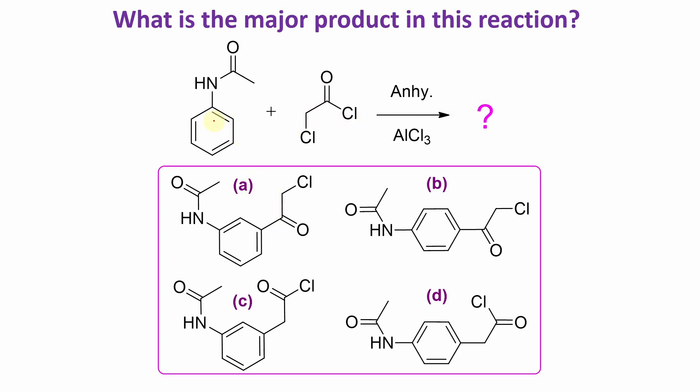What is the major product of this reaction? This is actually a secondary amide. I'll more specifically say it's amide, reacted with this chloroacetyl chloride in presence of anhydrous AlCl3. What is the product? From all these options, it looks like it is nothing but aromatic electrophilic substitution.